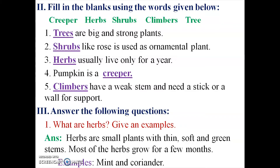First answer — Trees are big and strong plants. Second answer — A plant like rose is used as an ornamental plant. Rose is a shrub.